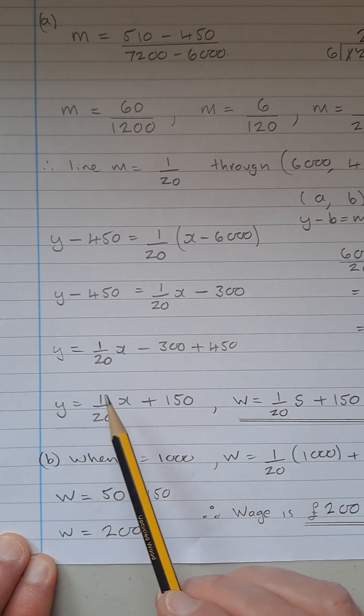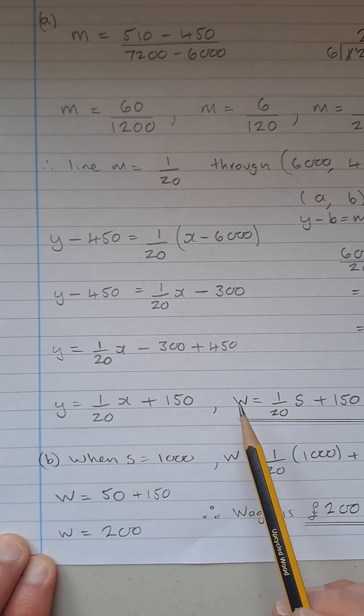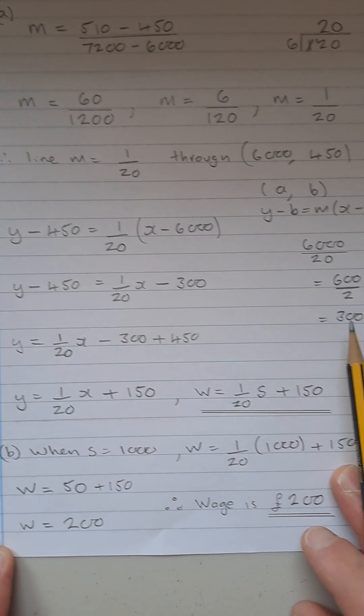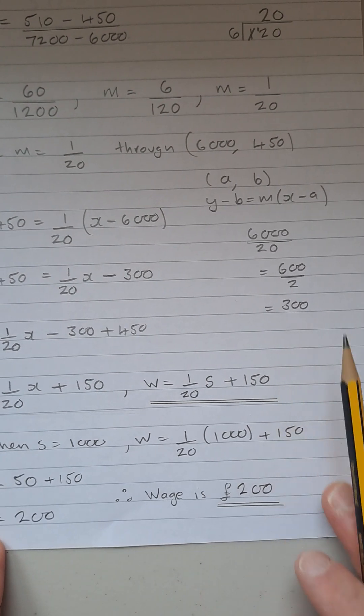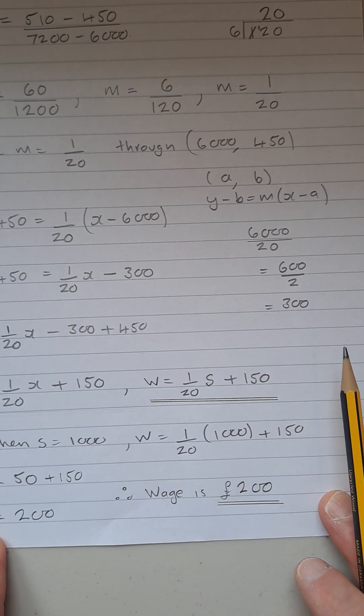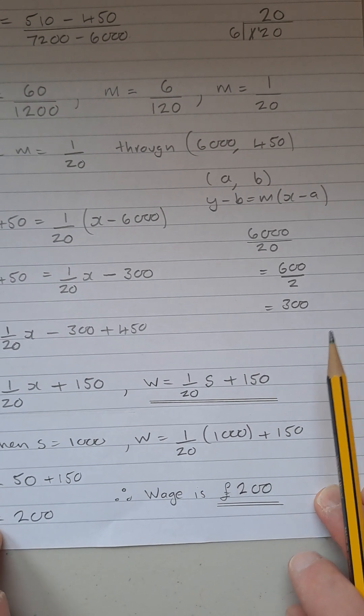Don't forget, it's not a Y and it's not an X. It's a W and an S. So we have W equals 1 over 20 times S plus 150.